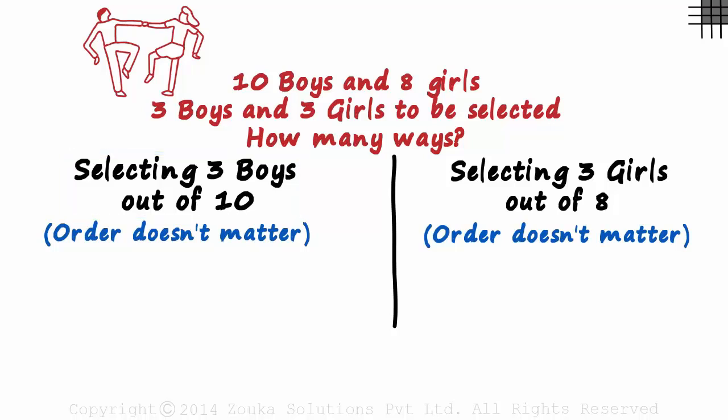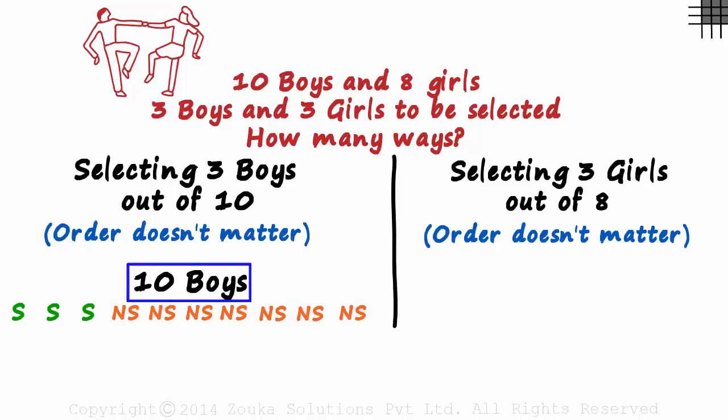We know that there are 10 boys. We can select any 3 boys. To show that, we can say S 3 times. What about the remaining 7? Each of them is not selected. Out of 10, 3 are selected and 7 are not selected.